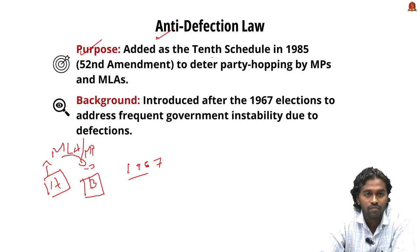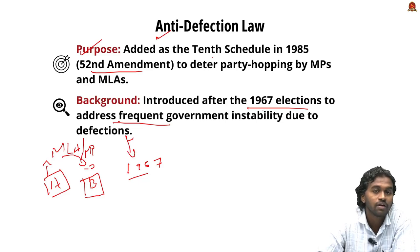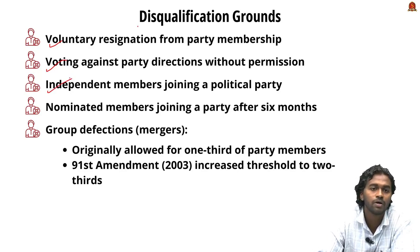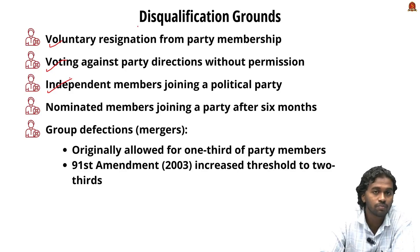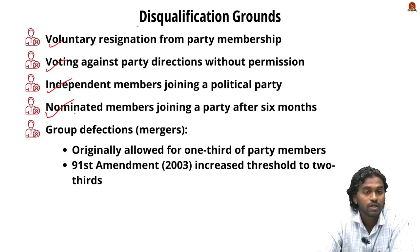The anti-defection law was added as the 10th Schedule in 1985 through the 52nd Amendment, to deter MPs and MLAs from switching political parties. Grounds for disqualification include: voluntary resignation from party membership; voting against the party's direction without permission; independent members joining a political party; and nominated members joining a political party after six months. Nominated members appointed by the Governor or President who join a political party are also disqualified.